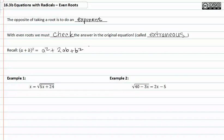In example one, notice that we have x equal to something that's under a square root. If we raise both sides of the equation to an exponent, that's performing the opposite operation. The square root goes away and we get x² = 5x + 24.